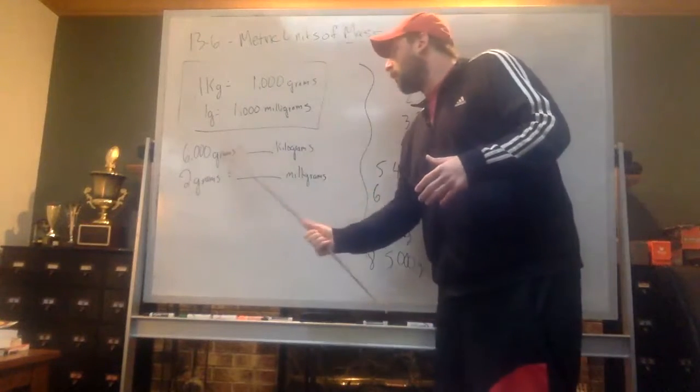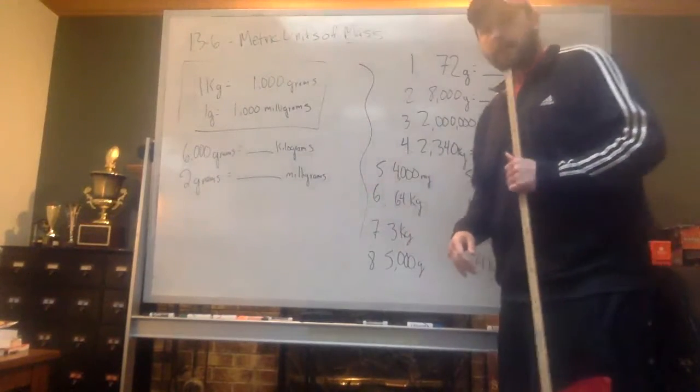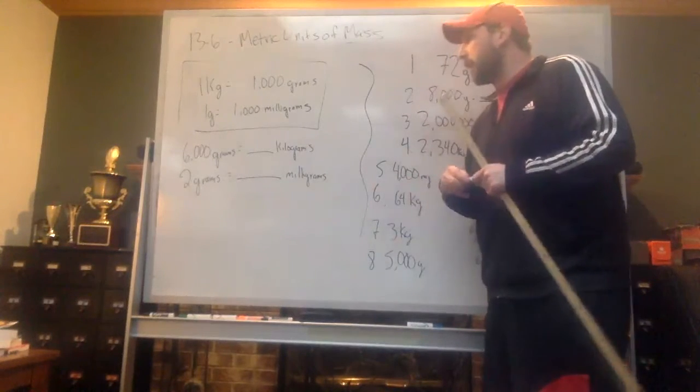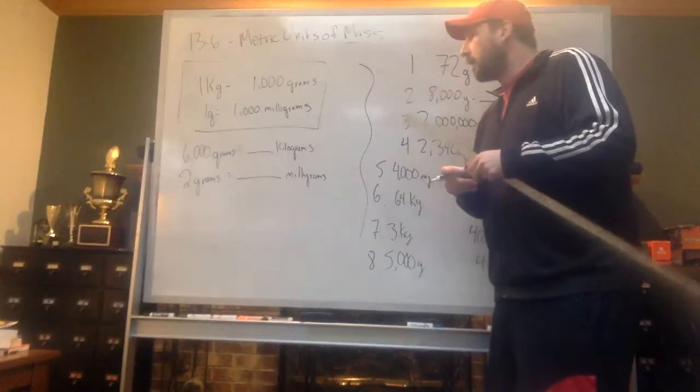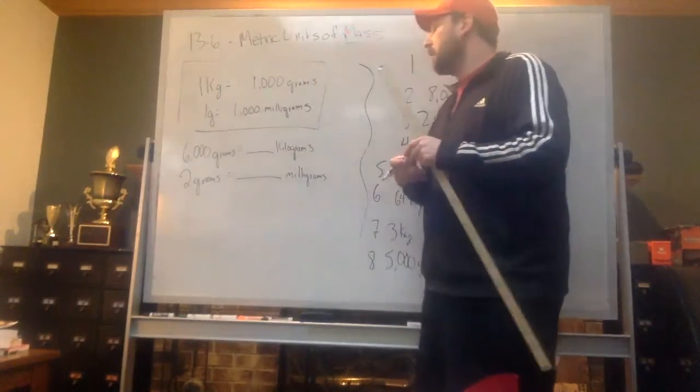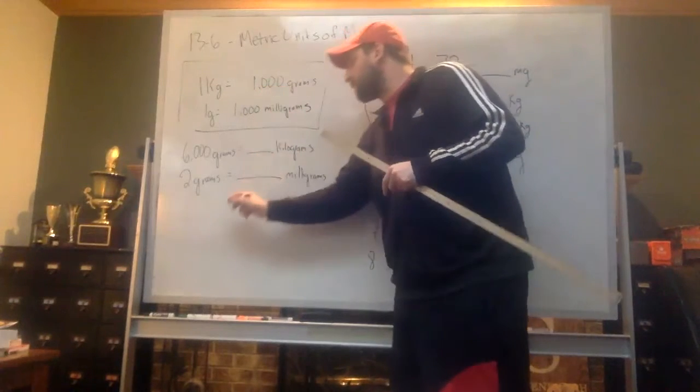What we got today is we have six thousand grams. And how many kilograms would that six thousand grams be? Well, if we know that there's a thousand grams in every kilogram, now we have six clumps of those thousand.